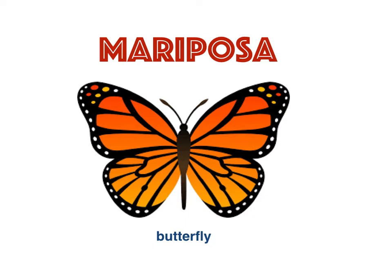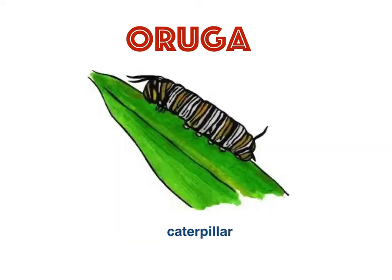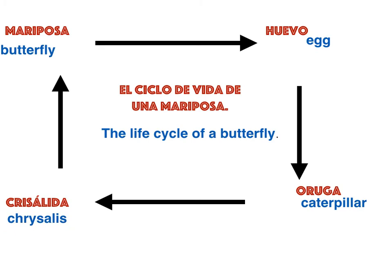Mariposa. Mariposa is a butterfly. Huevo. Huevo is an egg. Oruga. Oruga is a caterpillar. Chrysalida. Chrysalida is a chrysalis.